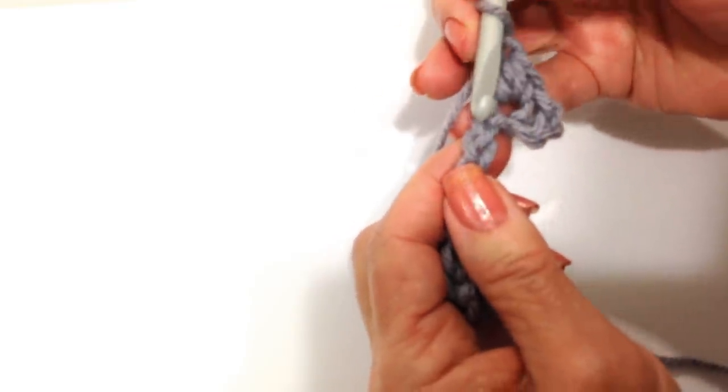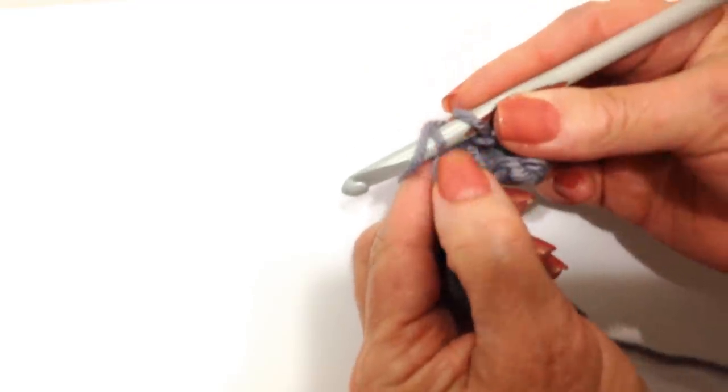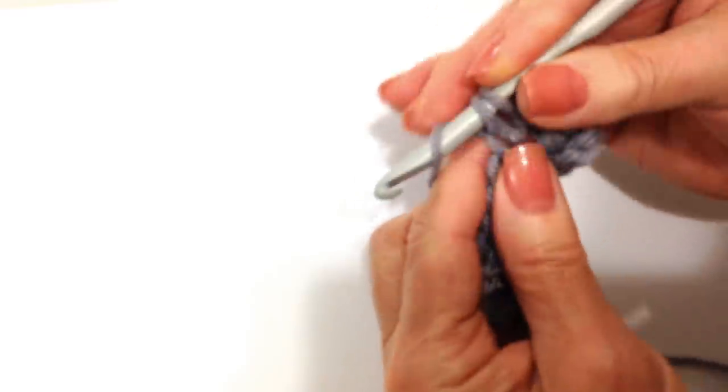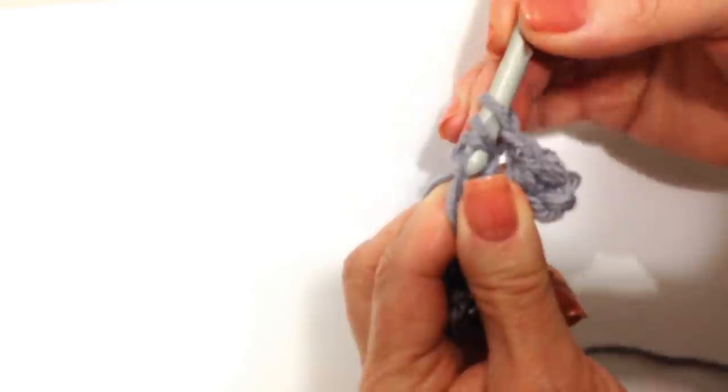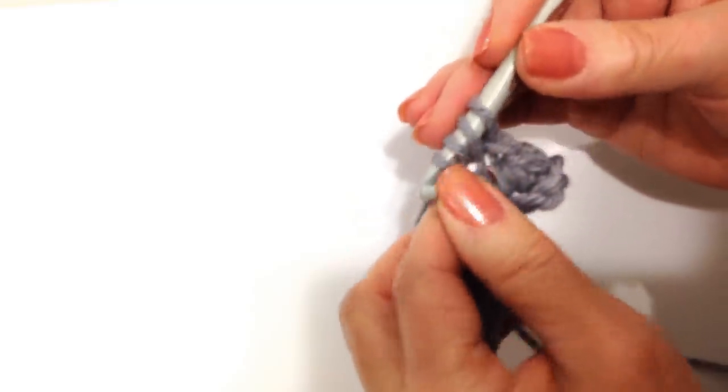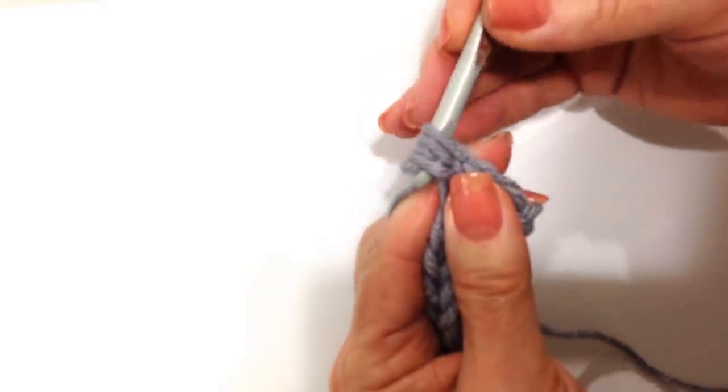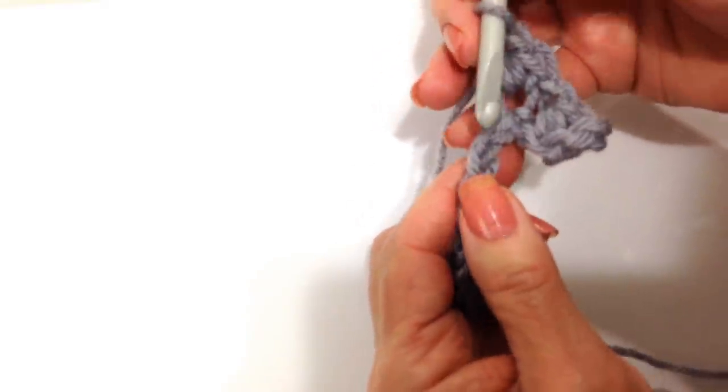Chain one, skip one. In the next stitch you're going to do the same thing. Insert the hook through the stitch, pick up the yarn and pull it through. Yarn over the hook, go through the same stitch, pick up the yarn, pull it through, and you'll have four on the hook. And then you're going to pick up the yarn and pull it through all four. Chain one, skip one.